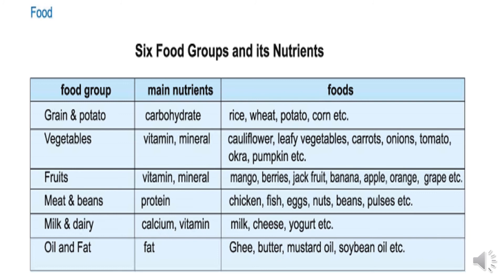Food group 5: Milk and dairy. Main nutrients: calcium and vitamins. Foods include milk, cheese, yogurt, etc. Food group 6: Oil and fat. Main nutrients: fat. Foods include ghee, butter, mustard oil, soybean oil, etc.